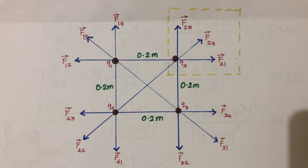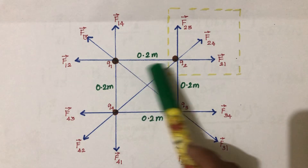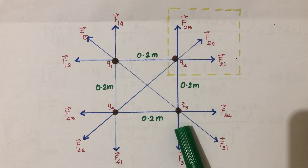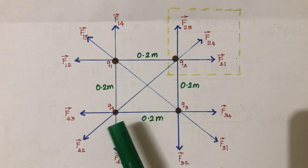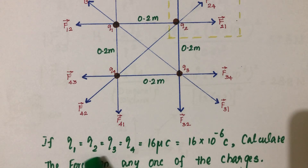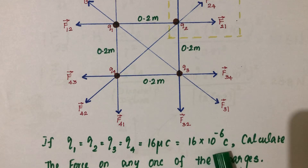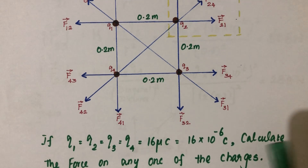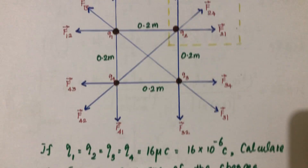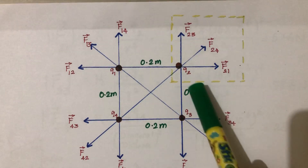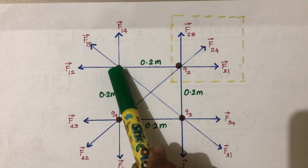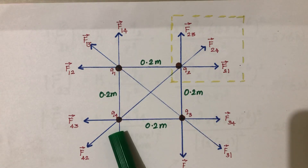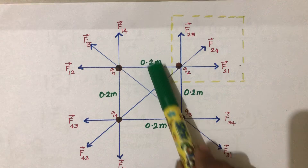Dear students, let's solve this problem. There are four charges at the corners of a square: q1, q2, q3, and q4. They are all equal to 16 microcoulombs, which is equal to 16 × 10⁻⁶ coulombs. We are going to calculate the total force acting on any one of the charges — specifically, the total force acting on q2 due to q1, q3, and q4.